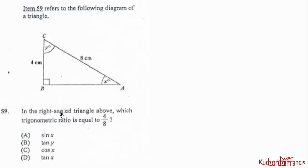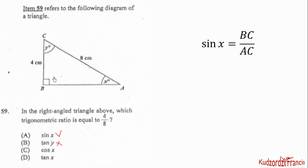Item 59 refers to the following diagram of a right-angle triangle. Which trigonometric ratio is equal to 4 out of 8? We have one side and the hypotenuse, so the ratio involves either cosine or sine — tangent does not involve the hypotenuse so it's ruled out. At angle x, the opposite side is 4, so this involves opposite over hypotenuse, which is sine. Therefore sine x equals BC over AC, giving 4 out of 8. The correct choice is A.